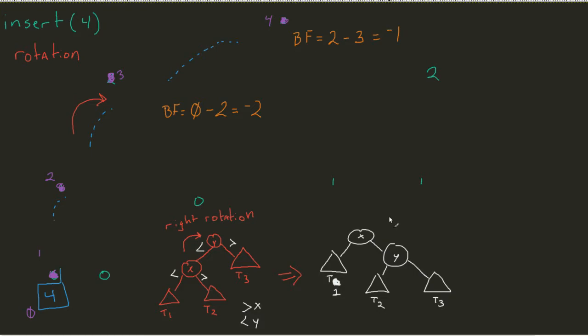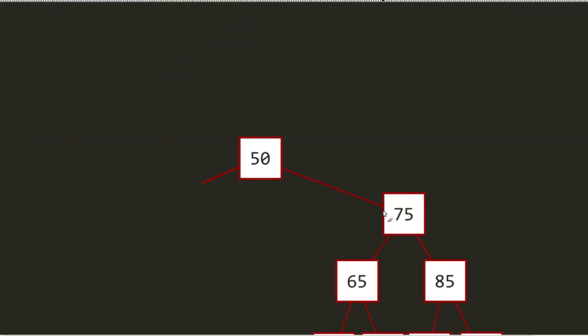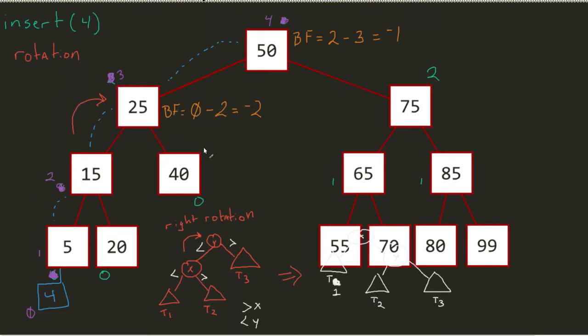So let's take what we've just seen here and let's apply it to our binary search tree. So we see I have a 25, 15, 5, 40, and 20. Well, if we take that same premise that 15 is my x, 25 is my y, we could think of 40 as that t3. We could think of 5, we could think of 40 as t3. We could think of 20 as t2. And we can think of 5 as t1.